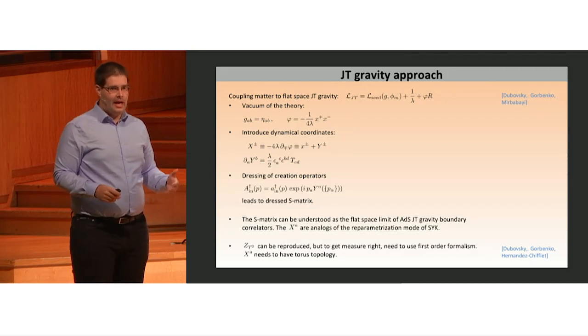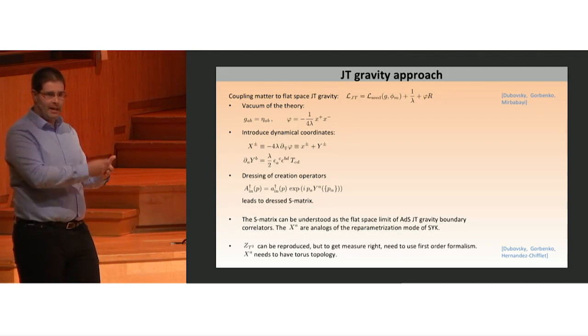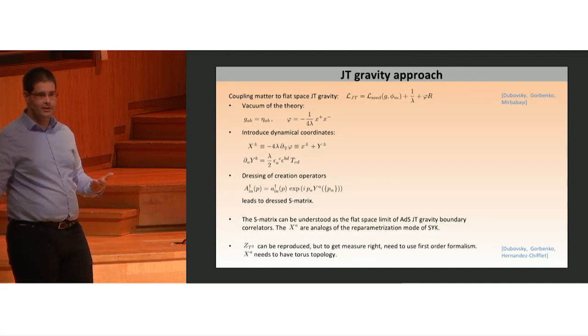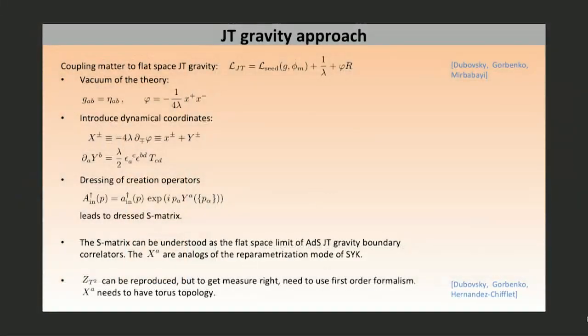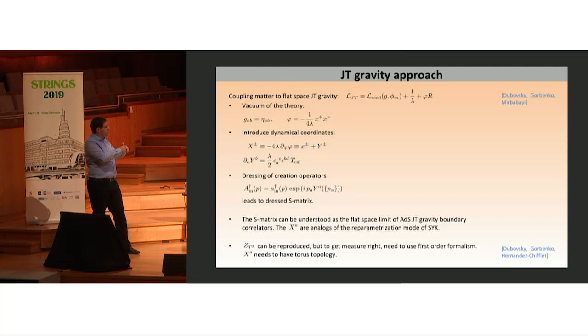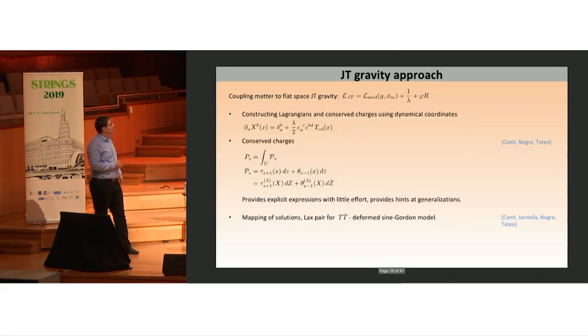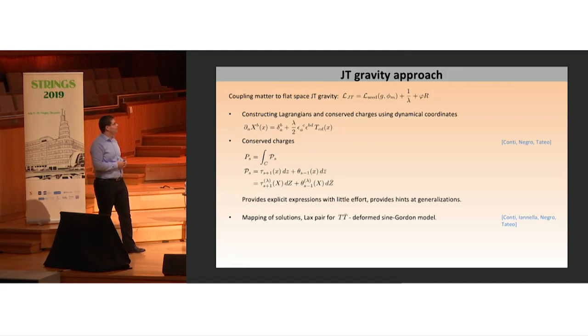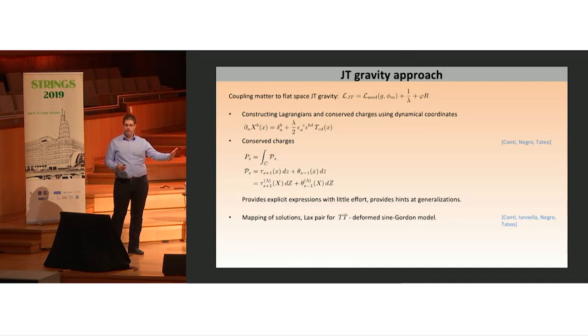This leads to an elegant derivation of the dressing phase by dressing the asymptotic creation and annihilation operators by the dynamical coordinate Y. The S-matrix can also be understood as the flat space limit of boundary correlators in matter coupled ADS-JT gravity. These dynamical coordinates perhaps can be thought of as analogues of the reparameterization Schwarzian mode of SYK. The torus partition function has been reproduced from this formulation. Besides providing conceptual advantages, this description is also a very efficient calculational tool to obtain the conserved currents of the deformed theory.